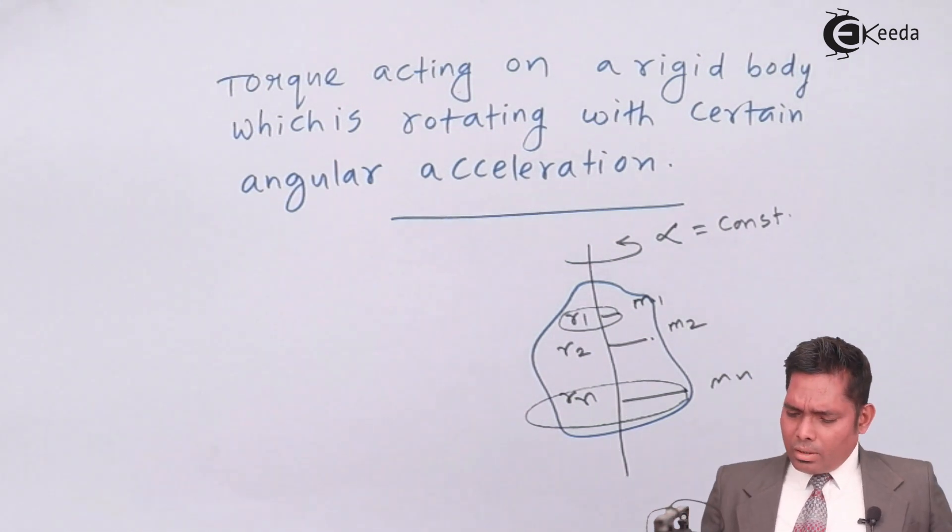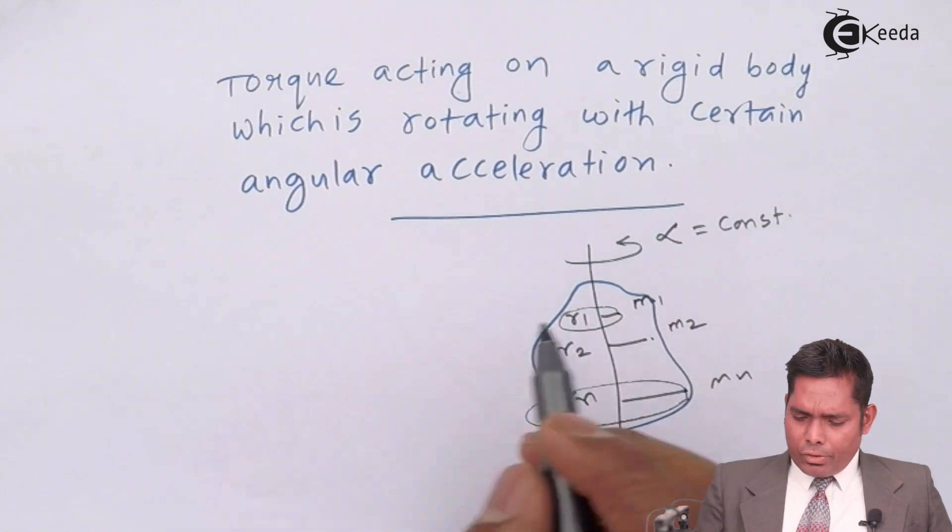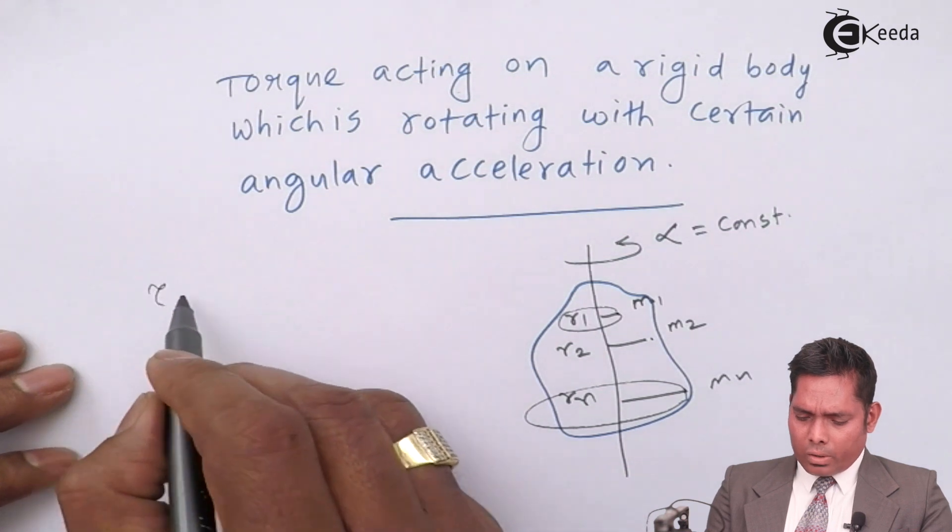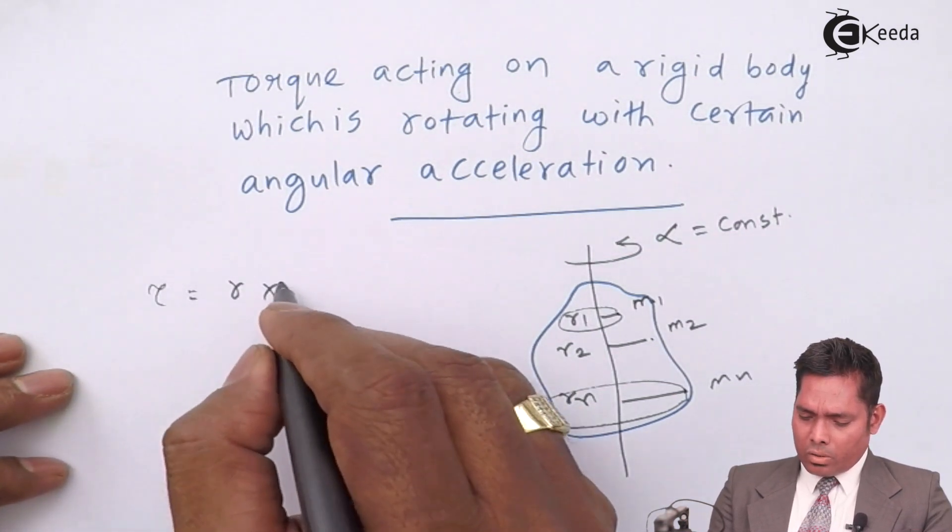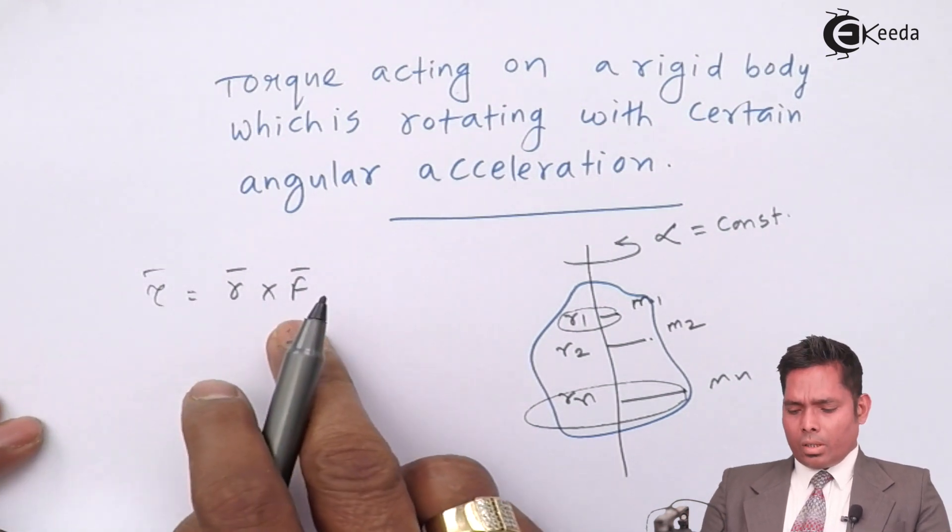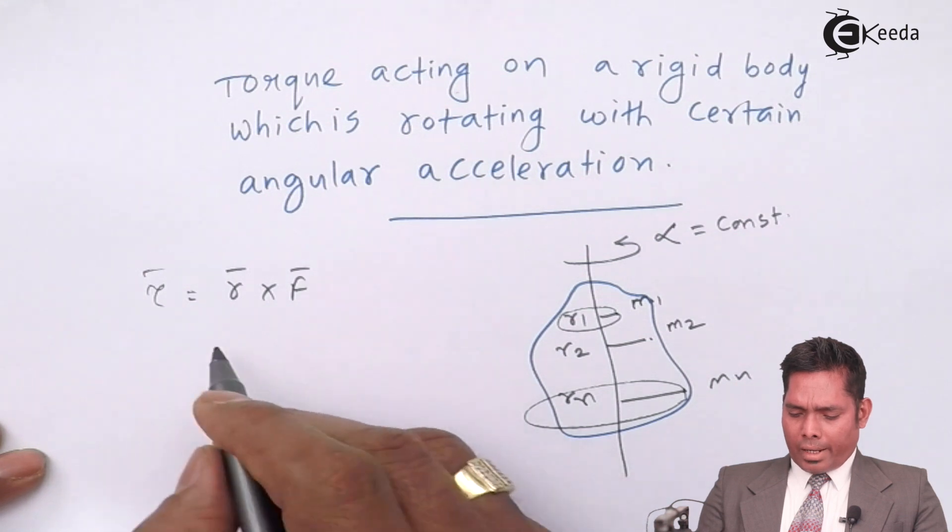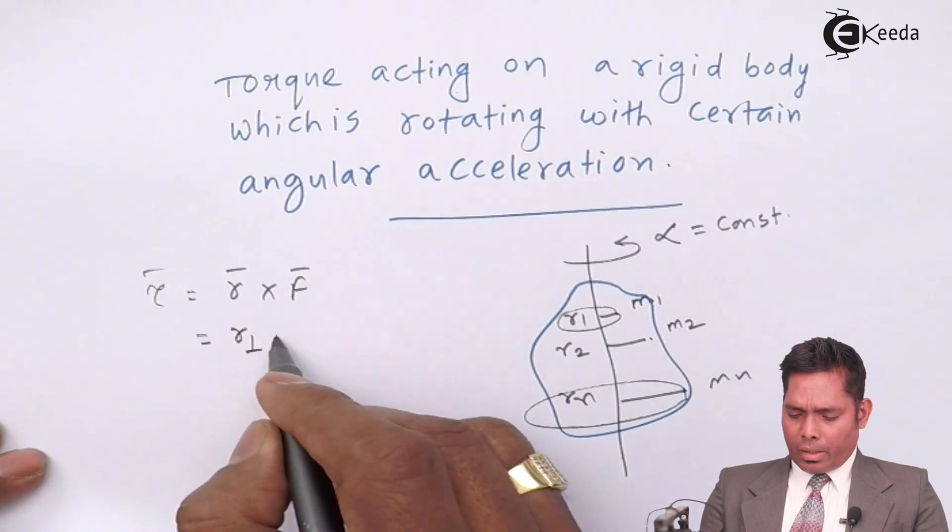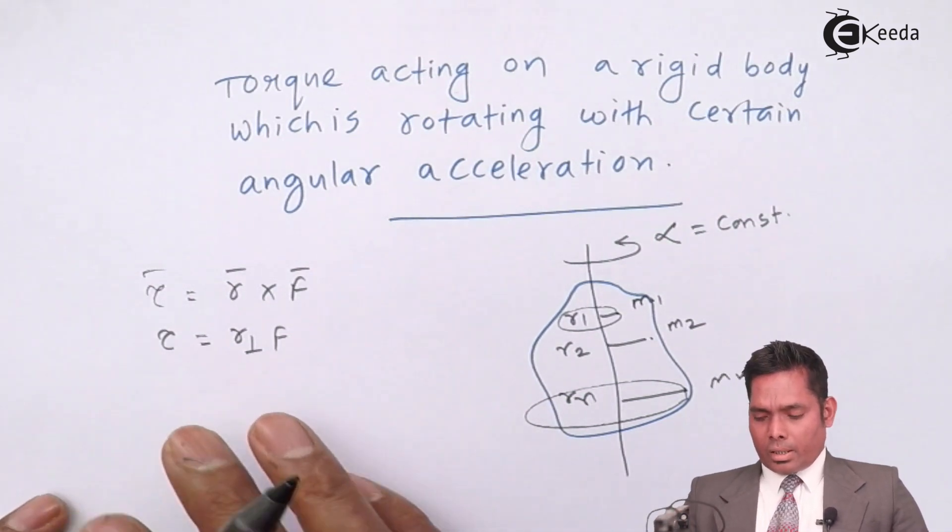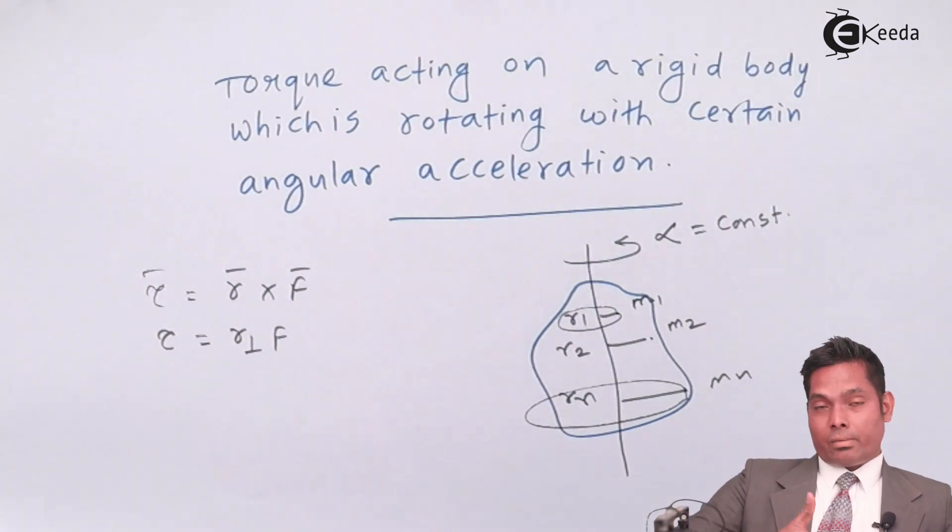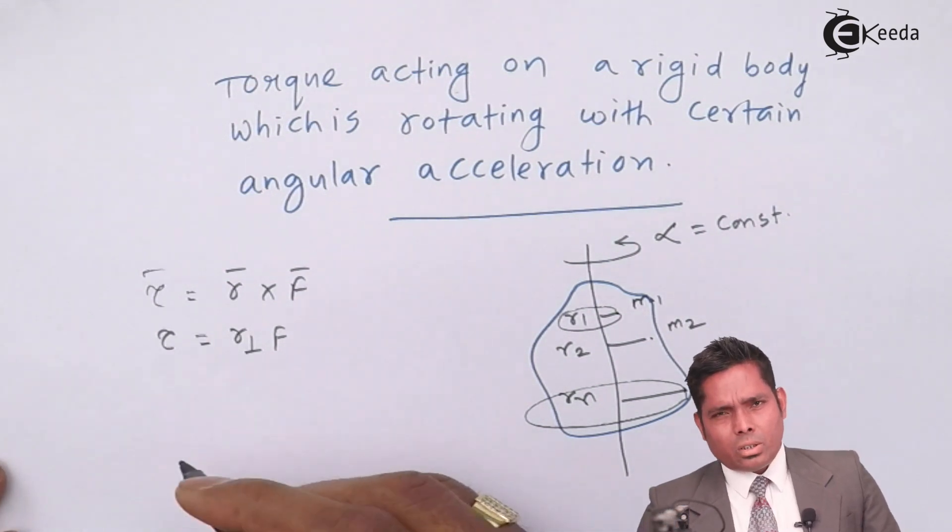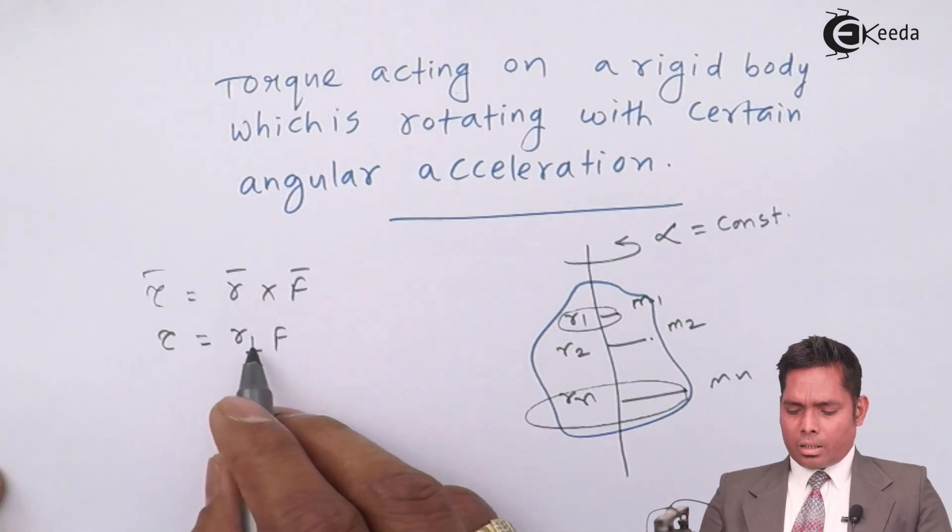Now, to find the torque, we know that the general expression for the torque is I alpha. Torque is basically r cross f, the cross product of two vectors. R cross f or r perpendicular f. As it is rotating like that, the torque will be along the axis pointing outward. I am interested in finding the magnitude of torque, that is r perpendicular f.